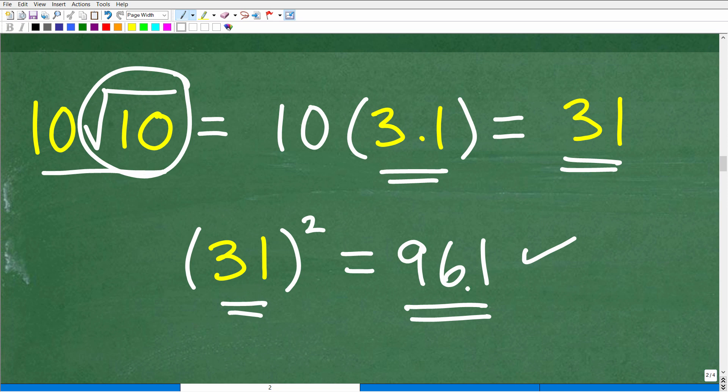Well, 31 is, it's not quite a thousand. So we would want to add a little bit more to our decimal here, maybe 3.13 or 3.14.